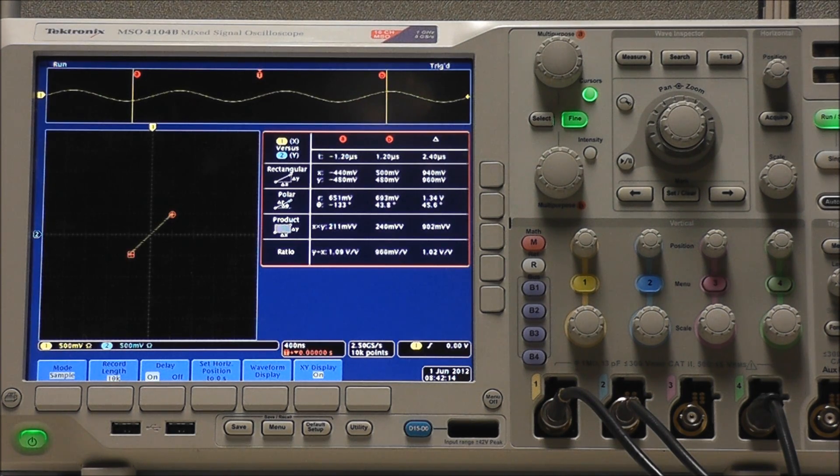Our four XY cursor readouts show us rectangular and polar coordinates, as well as product and ratio. As you can see, we have a nice straight line with a ratio of approximately 1 volt per volt. This tells us that the waveforms have equal frequency, amplitude, and are in phase.